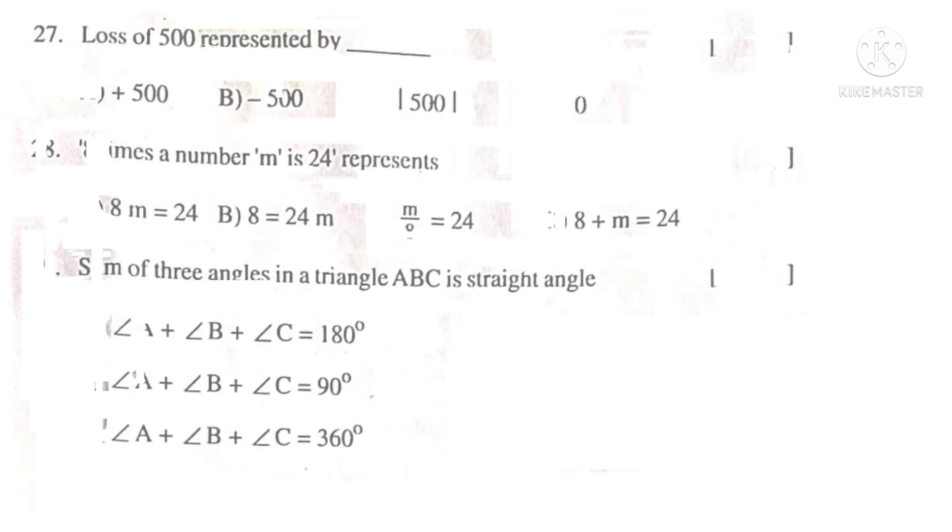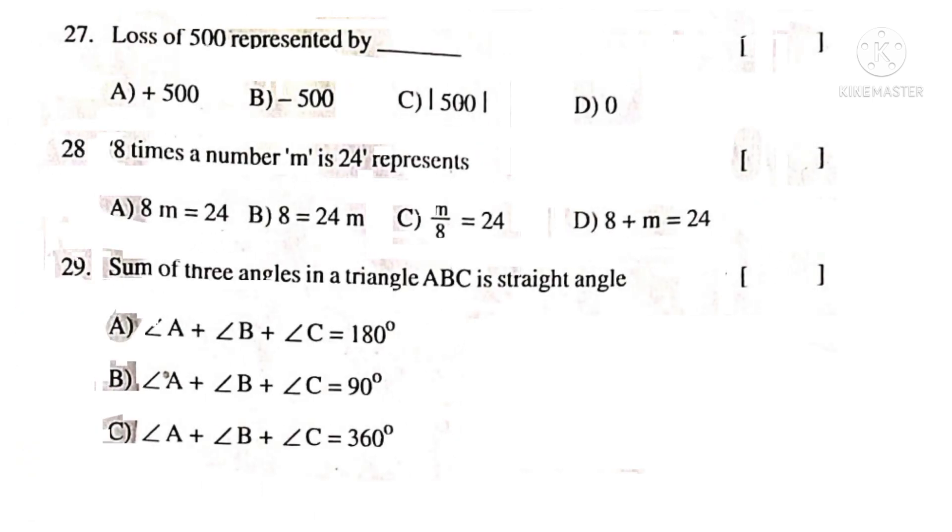Now, 27th. Loss of 500 represented by dash. Observe the word loss. It indicates minus. So, minus 500 is the answer. So, the correct choice is B.